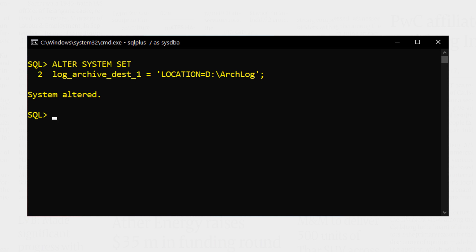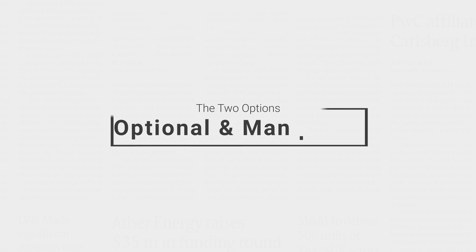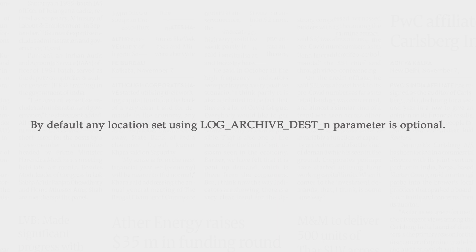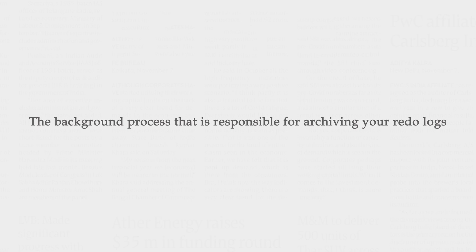Let's talk more about optional and mandatory archive log destination directories. Any location set as archive log destination directory using the LOG_ARCHIVE_DEST_N parameter can either be an optional or a mandatory location. By default, any location set using this parameter is optional. Let's say you have two archive log destination directories created and both of them are optional. Then the archiver process — the background process responsible for archiving your online redo logs — does not guarantee in which directory your redo logs will be written, or even if they will be written at all.